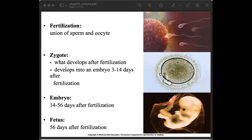Fertilization is the union of the sperm and the oocyte or egg. After fertilization, a zygote develops. The zygote develops into an embryo three to fourteen days after fertilization, and from fourteen to fifty-six days it is called an embryo. After fifty-six days it becomes a fetus, until the expulsion of the baby. Please memorize these numbers: zygote is three to fourteen days, embryo is fourteen to fifty-six days, and fetus is fifty-six days onward.